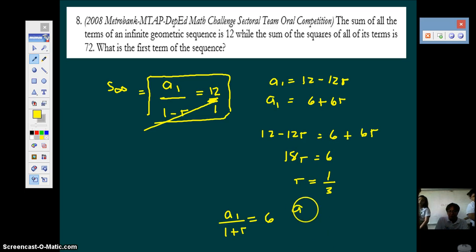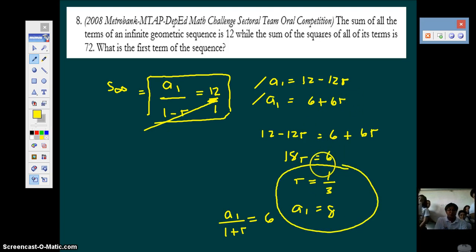So the first term, choose any of the two: 12 minus 12r, your r is 1 third, 12 times 1 third, that's 12 minus 4, so 8. You can check here: 6 plus 1 third of 6, 6 times 1 third is 2, 6 plus 2 is 8. So here you go, your terms, the first term of the sequence.